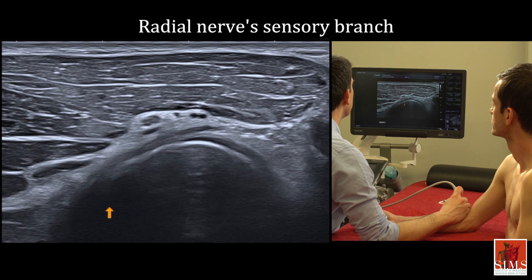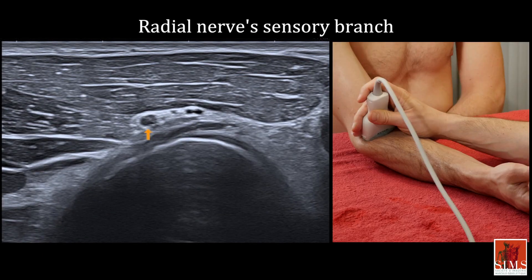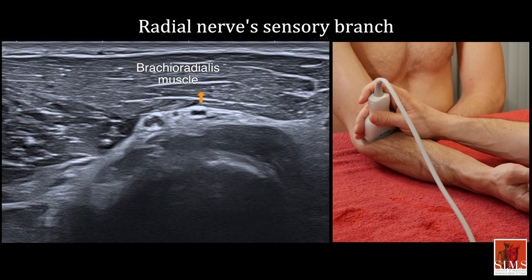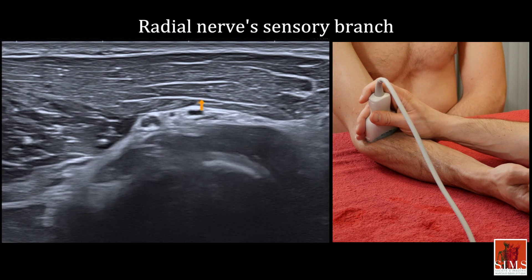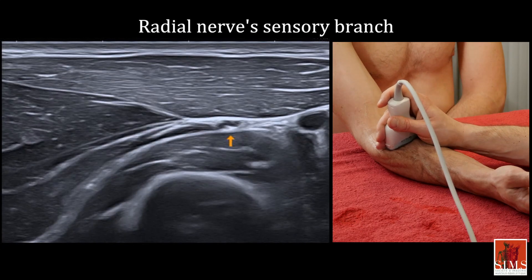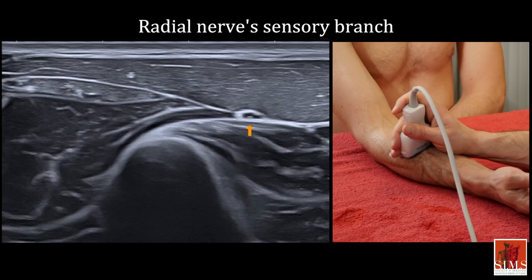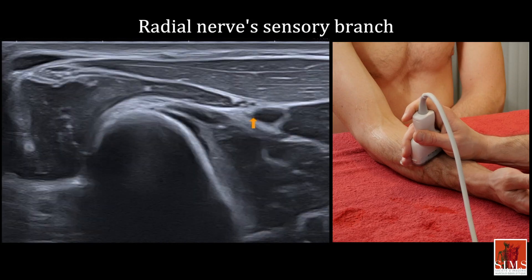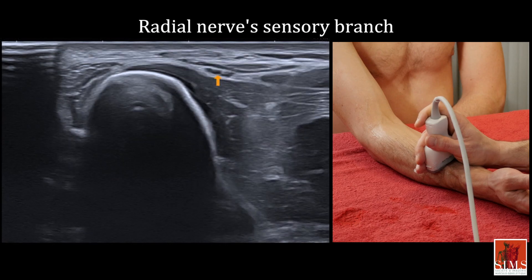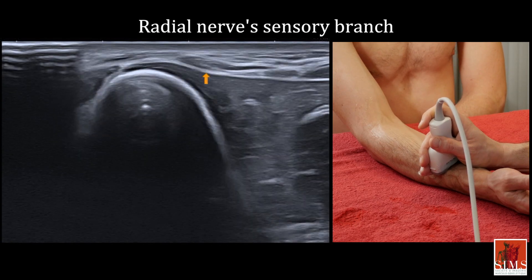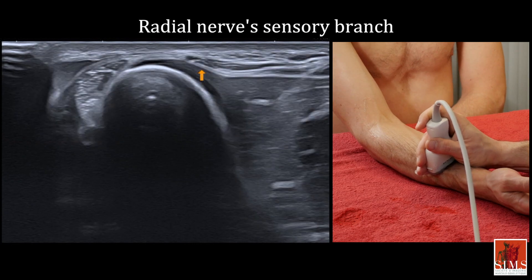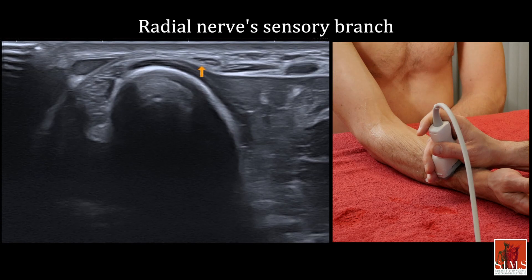The sensory branch of the radial nerve is located medial to the motor branch, at the end of the arrow, and deep in the brachioradialis muscle. It continues along the anterolateral surface of the forearm, still deep in the brachioradialis. Then in the distal third of the forearm, it passes under the brachioradialis tendon to position itself lateral to it and then pierces the superficial fascia — clearly visible here — to finish under the skin.